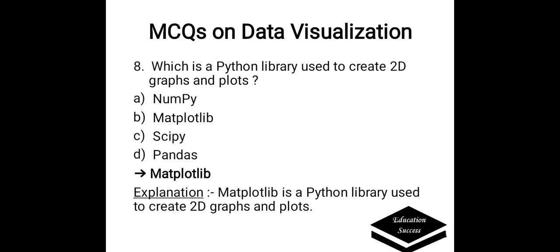Which is a Python library used to create 2D graphs and plots? Options are: A. NumPy, B. Matplotlib, C. SkyPy, D. Pandaj. Correct answer is Matplotlib. Matplotlib is a Python library used to create 2D graphs and plots.